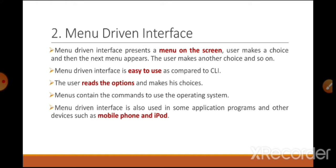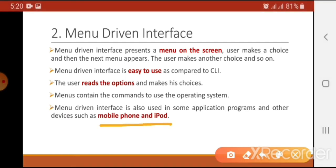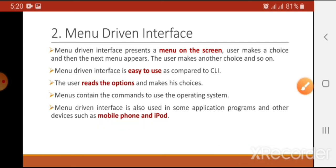Devices such as mobile phones and iPods previously had menu driven interfaces. For example, old Nokia phones had menu driven interfaces — you go to the menu and select options like Games or Messages. If you select Messages, the next menu appears with options like New Message, Inbox, and Sent Items, and by selecting from the menu you perform your desired task.